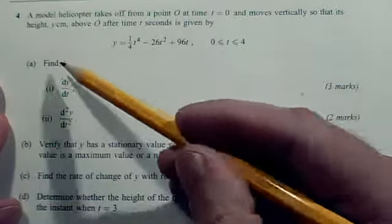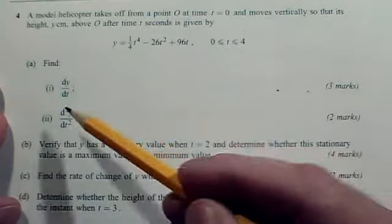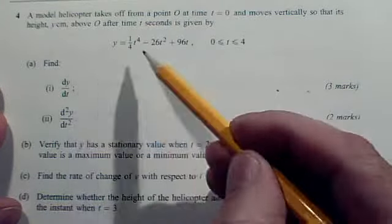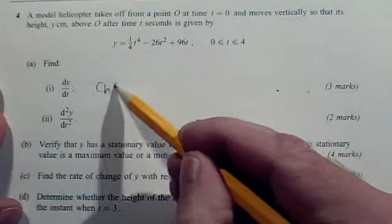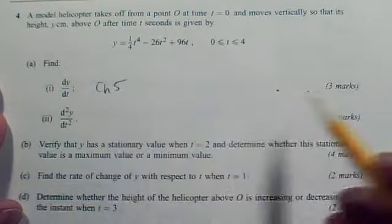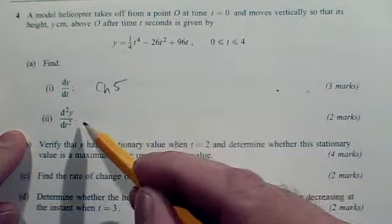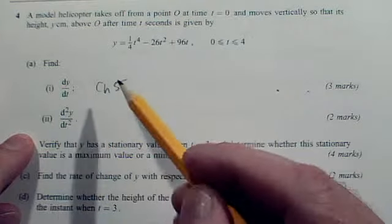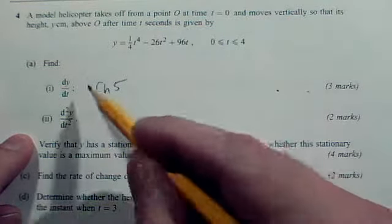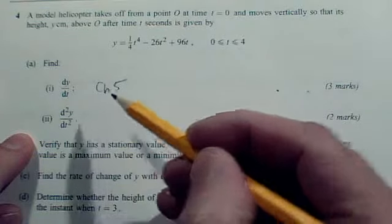We can ignore the helicopter business to begin with because all we've got to do in Part A is differentiate, get dy by dt. This is your rule from Chapter 5. Three terms to differentiate for three marks. And then we've got to differentiate again to get the second derivative. Two more easy marks for just applying the differentiation rule from Chapter 5.